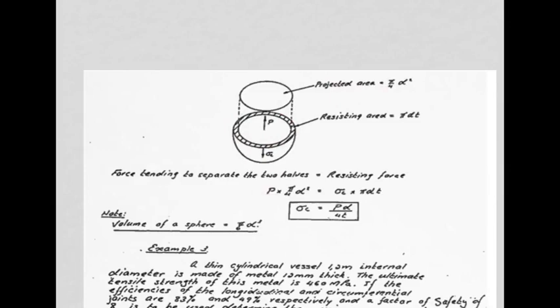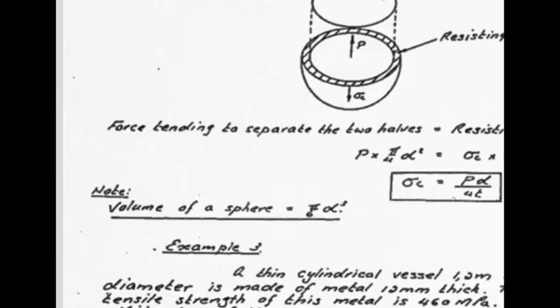Example two is a derivation: obtain an expression for the hoop stress in a thin spherical vessel subjected to internal pressure. Looking at a cross-section through the spherical vessel, we again use a projected circular area and apply the same method — force tending to separate the two halves equals resisting force. We arrive at the very similar formula pd over 4t. The volume of a sphere is pi/6 · d³.